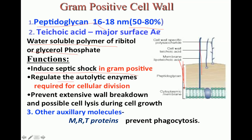Teichoic acid also regulates autolytic enzymes required for cellular division and prevents excessive cell lysis during growth. Gram-positive bacteria can also contain M proteins, mainly seen in Streptococcus pyogenes, which prevent engulfment by phagocytic cells. Teichoic acid and cell-associated proteins are the major surface antigens - molecules that stimulate the host immune response to produce antibodies, which react to bacterial surface antigens and help eliminate the microbes.